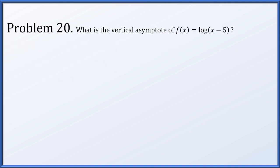Problem 20: what's the vertical asymptote of f of x equals the logarithm of x minus 5? This is simply a logarithm shifted 5 units to the right, so instead of the vertical asymptote being at x equals 0, it's at x equals 5.